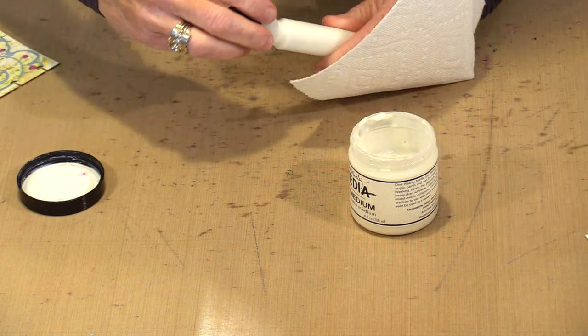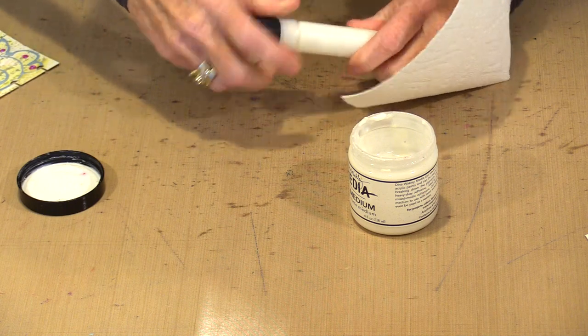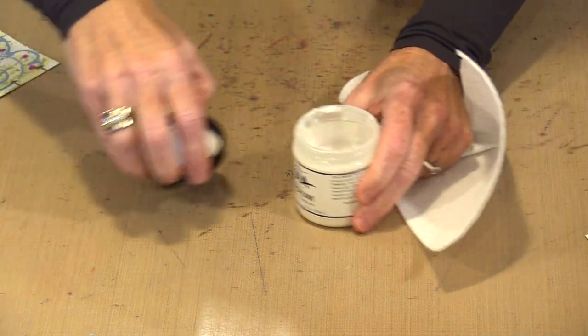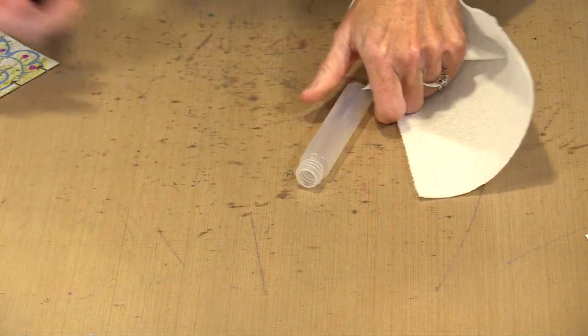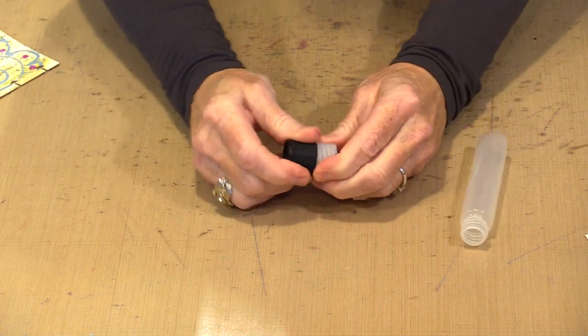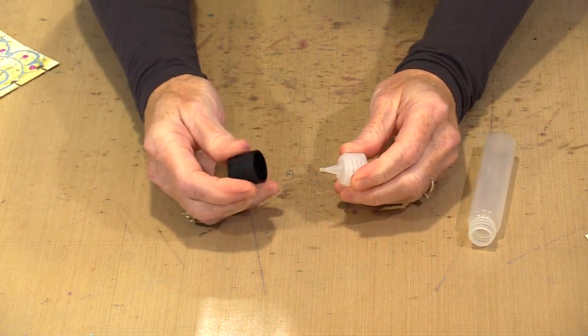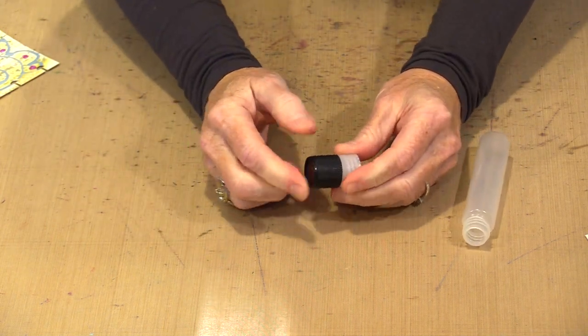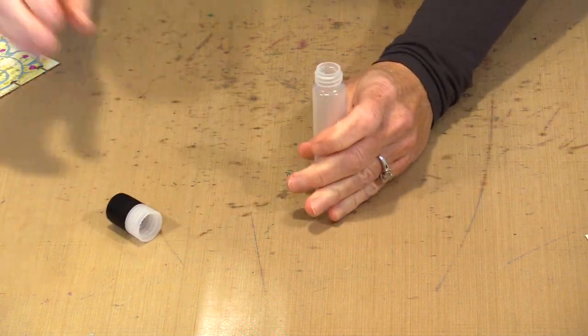So when you get these liners, you're going to get them in two pieces. You have the tube and then you have the cap and tip assembly. These caps don't screw on and off, they just snap on and off. Once you get this product in here, you put this on.